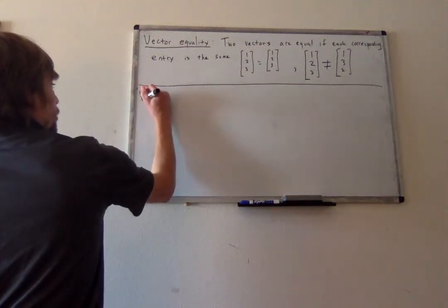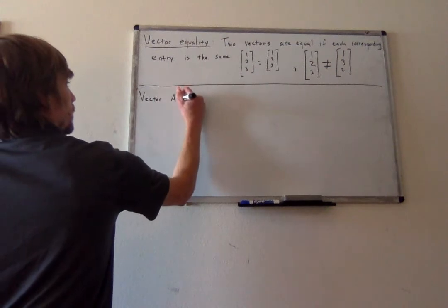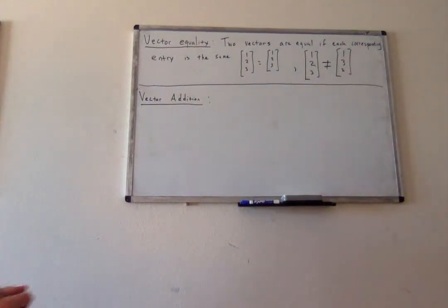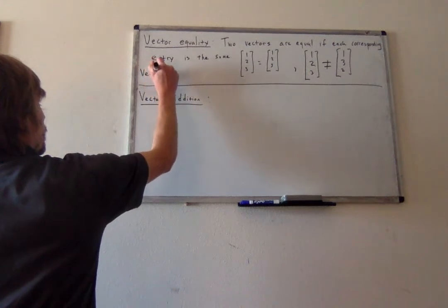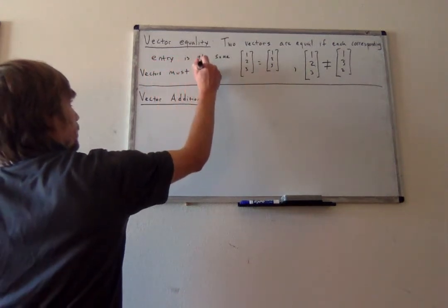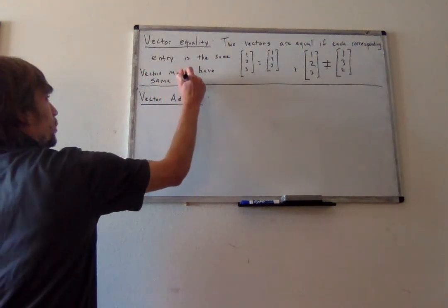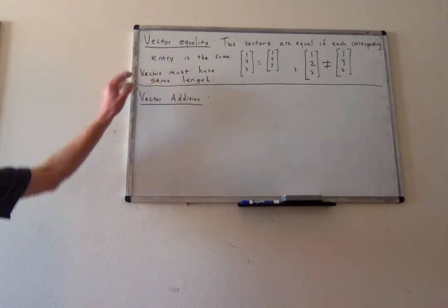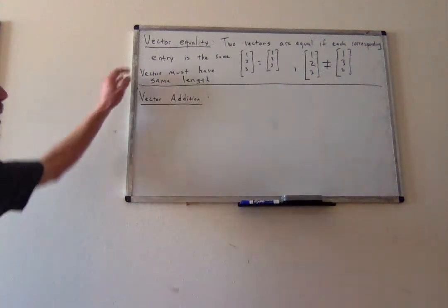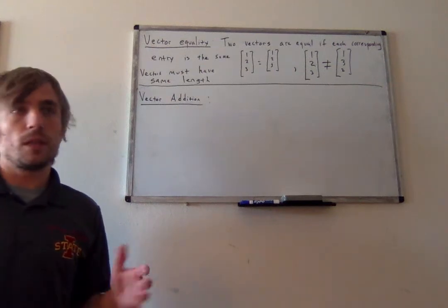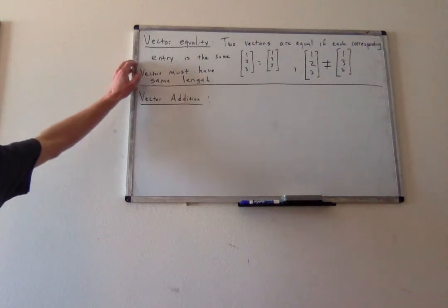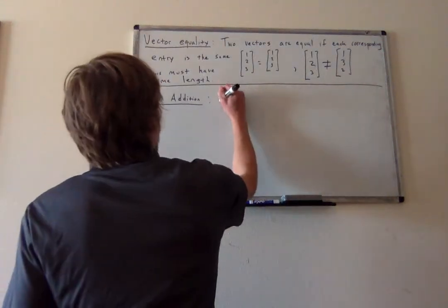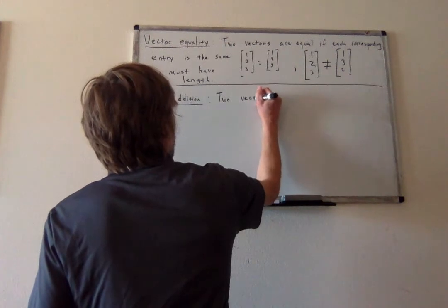We also have vector addition. I should point out that the vectors must also have the same length. For vector equality, if the vectors don't have the same length, the corresponding entries can't be the same. If two vectors do not have the same length, they are immediately not equal. Same with vector addition — we can add two vectors of the same length, but we cannot add vectors of different lengths.